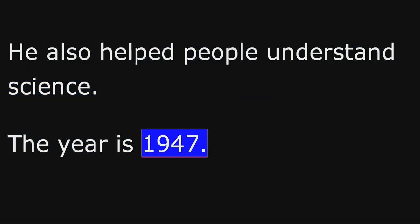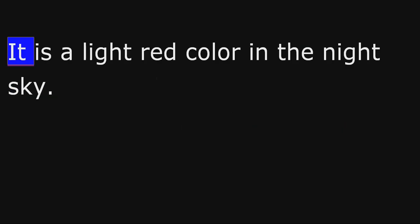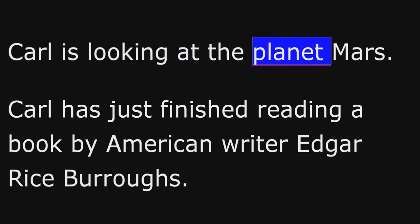The year is 1947. Twelve-year-old Carl Sagan is standing outside a small house in the eastern city of Brooklyn, New York. It is dark. He is looking up at the sky. After a few minutes, he finds the spot for which he has been searching. It is a light red color in the night sky. Carl is looking at the planet Mars.